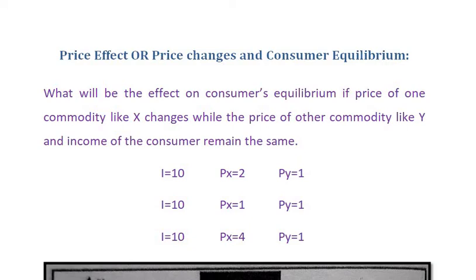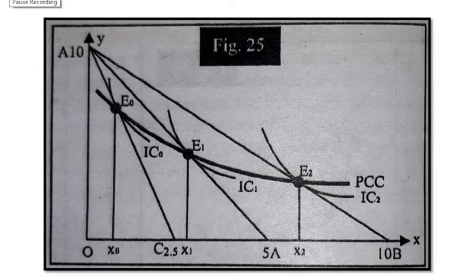First, price of X is 4. Price of Y is the same as 1. Income is 10. Price of X is equal to 2 and price of Y is 1.